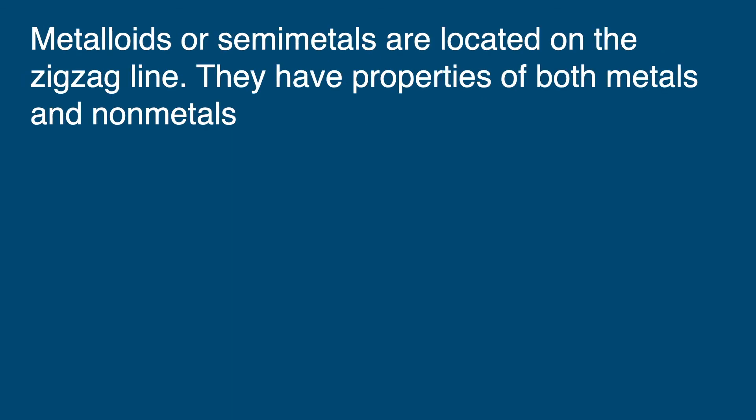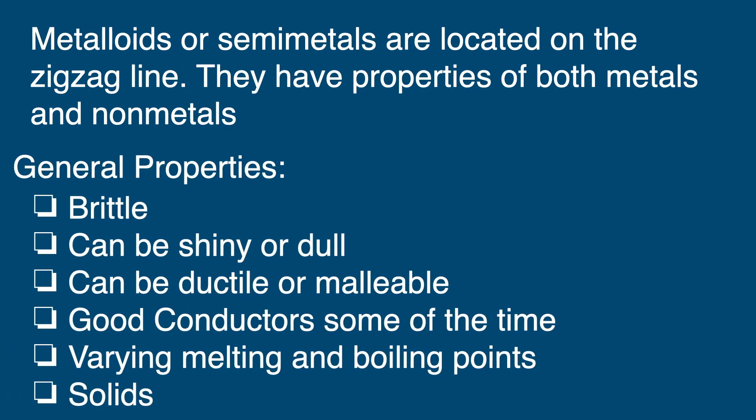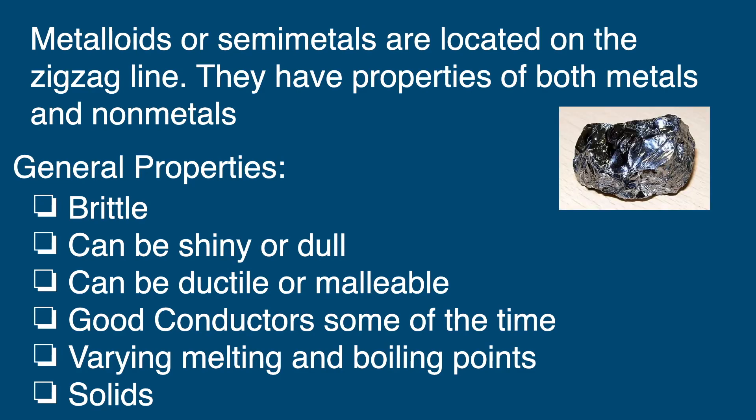Metalloids or semi-metals are located on that zigzag line and they have properties of both metal and non-metals. Some general properties can be that they are brittle. They can be shiny or dull.